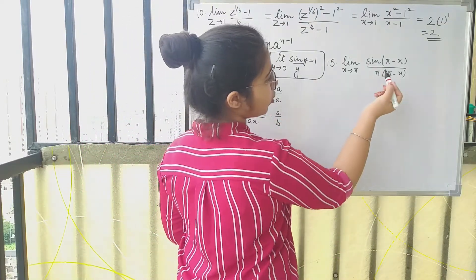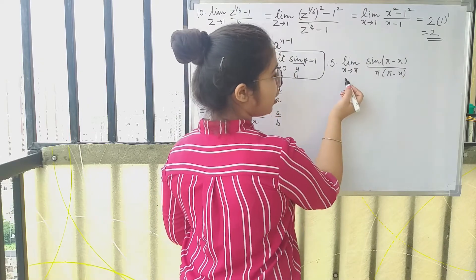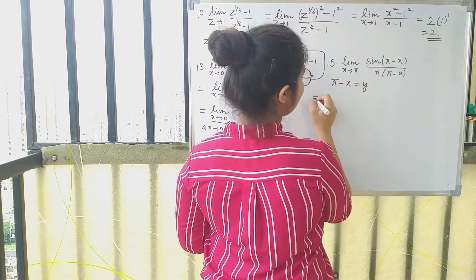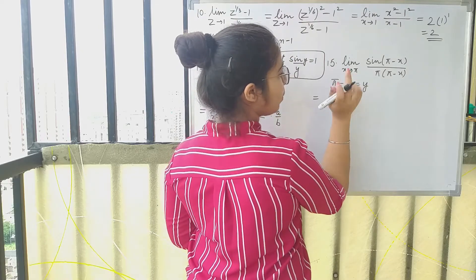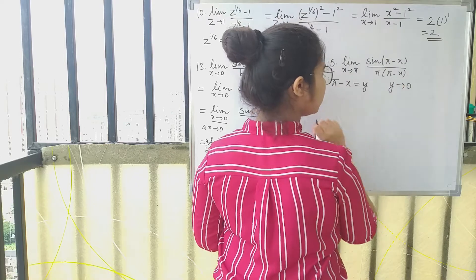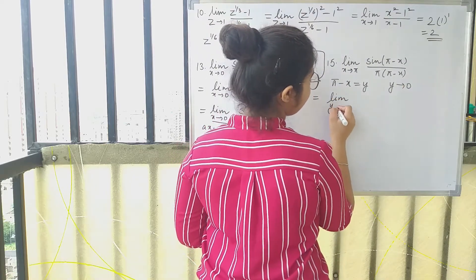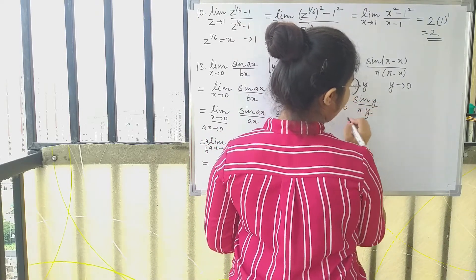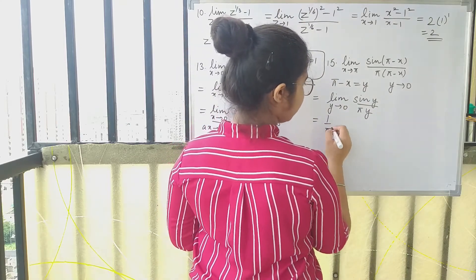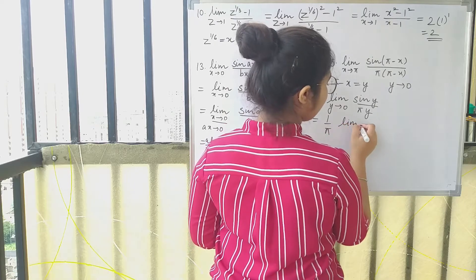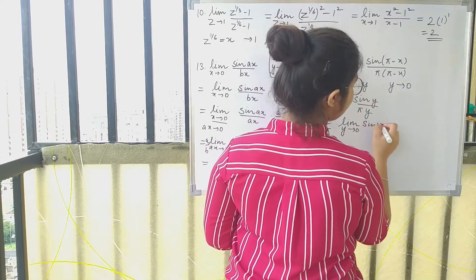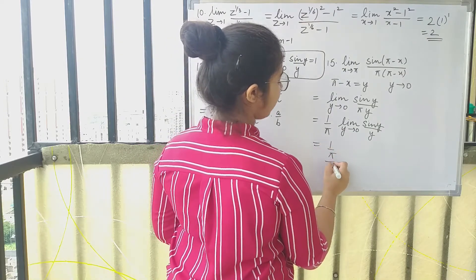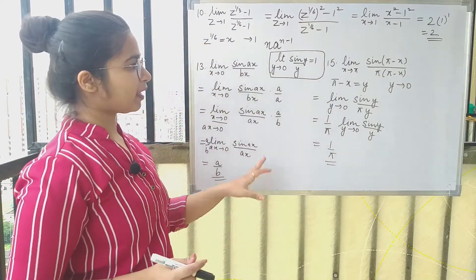Moving on to the 15th question, our angle is π − x and the limit is x tending to π. We take π − x to be y. As x tends to π, y tends to 0. So our limit changes to limit y→0 and the function becomes sin(y)/(π·y). Since π is a constant, we take it out: (1/π) × limit y→0 of sin(y)/y. We know this equals 1, so the answer is 1/π.